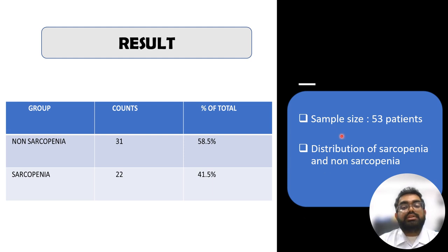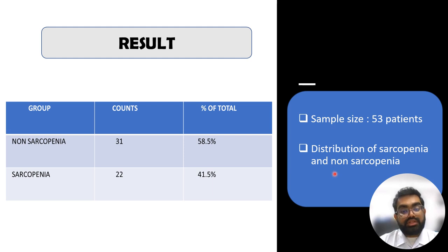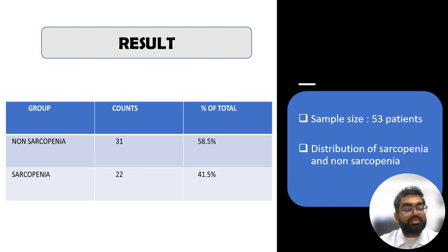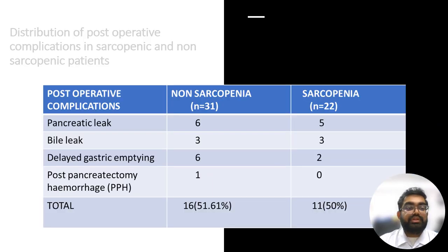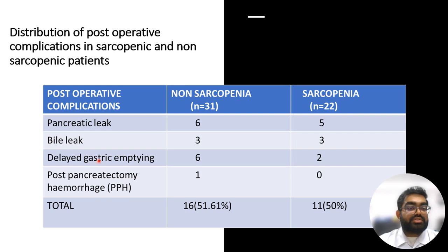In this study, a total of 53 patients were taken and divided into sarcopenic and non-sarcopenic groups. Total 31 patients were non-sarcopenic and 22 patients were sarcopenic. The distribution of post-operative complications in both groups was evaluated.